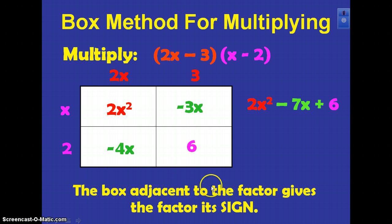The box adjacent to the factor gives the factor its sign. So since the 2x squared is positive, the 2x will be positive, and so will the x out here. This negative 4x, this box here was negative, so this 2 here becomes negative 2. What about out here? Yep, since this 3 sitting right here is next to a negative box, it's going to become negative 3.